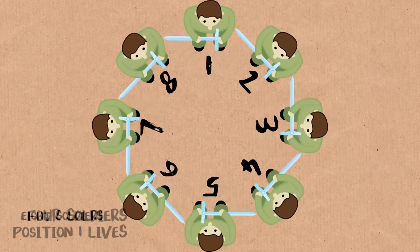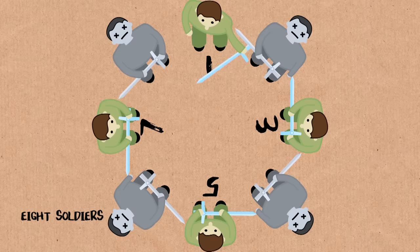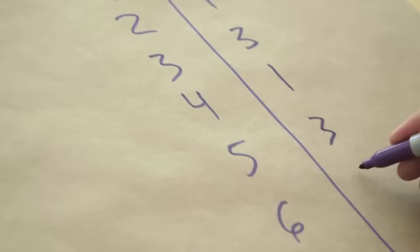If there's eight people, one kills two, three kills four, five kills six, seven kills eight, one kills three, five kills seven, one kills five, winner is one. So it was one, one, three, one, three, five, seven, one, three, five, seven, nine.